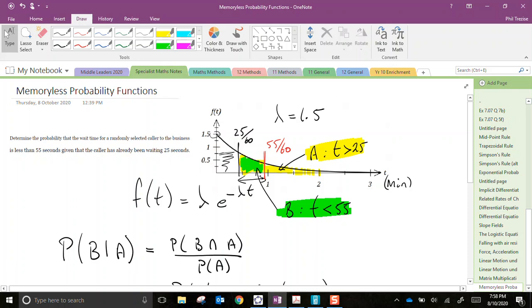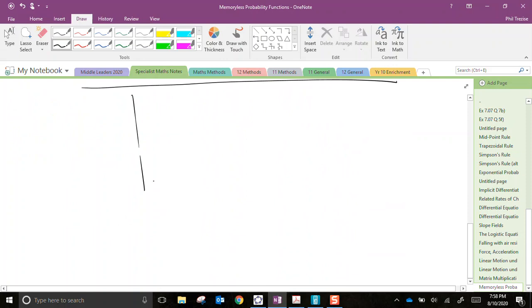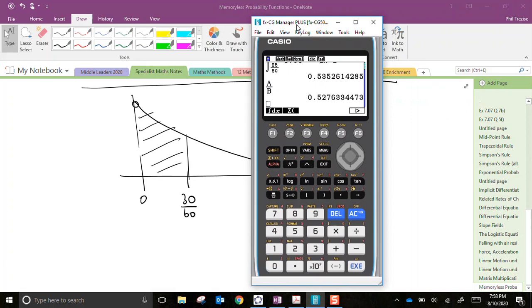There's a strange characteristic of exponential probability functions. If we were to calculate the probability from 0 to 30 seconds, or 30/60ths of a minute, if we were to calculate that probability for this same function, let's just do that and see what we get. So I'll go back to where I was, and I will change that lower limit to be 0, and I'll change the upper limit to be 30/60ths, or half a minute.